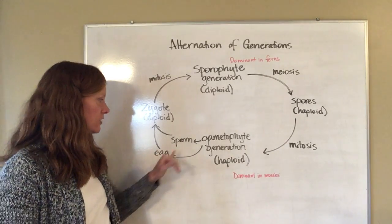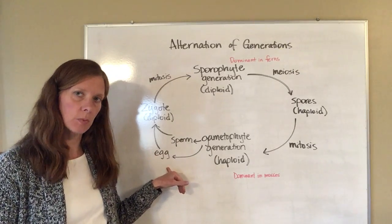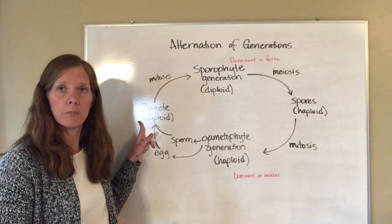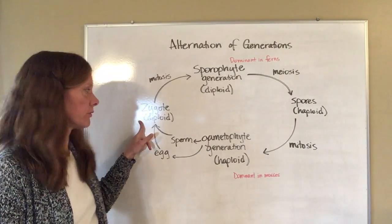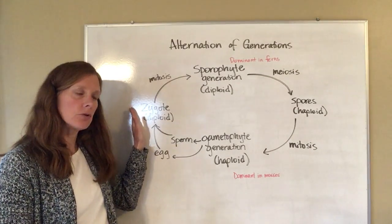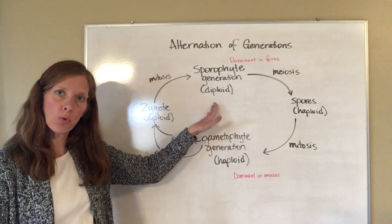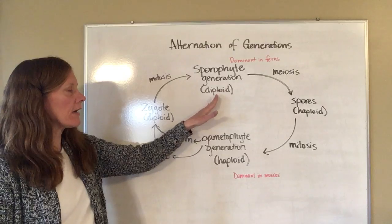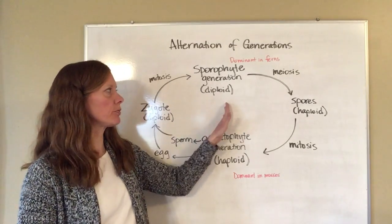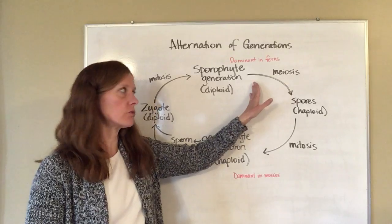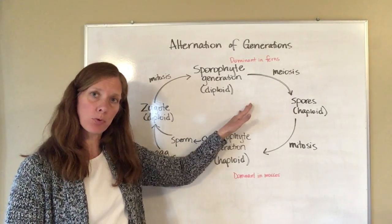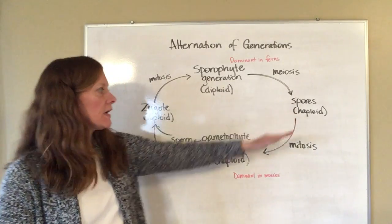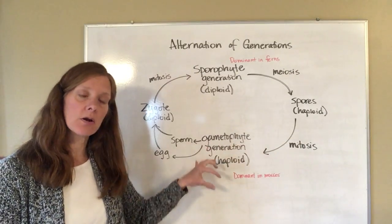The sperm and egg unite to make a zygote. Because they each have only half the number of chromosomes, once they combine you have a diploid cell with 2n, or twice the number of chromosomes. The zygote then reproduces by mitosis, making more diploid cells, resulting in the sporophyte generation. The sporophyte generation continues to reproduce, and at some point it undergoes meiosis, taking you from diploid back down to haploid when it produces the spores. This is a continuous cycle.